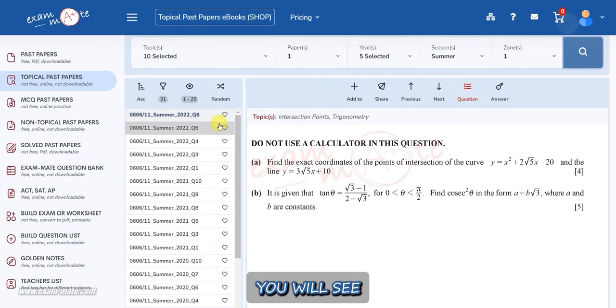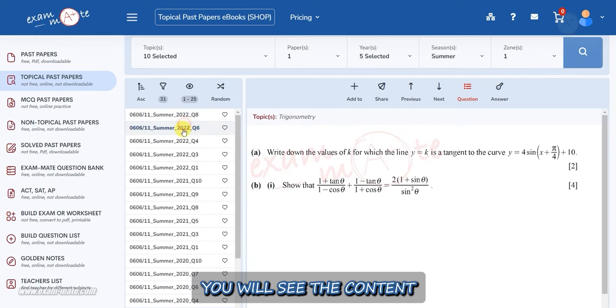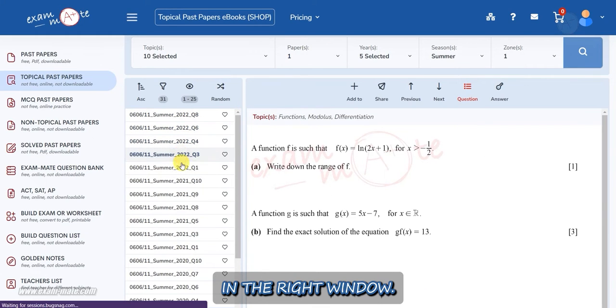In this section, you will see two windows. On the left, you will see a list of questions that you have filtered. If you click on each question, you will see the content of the question in the right window.